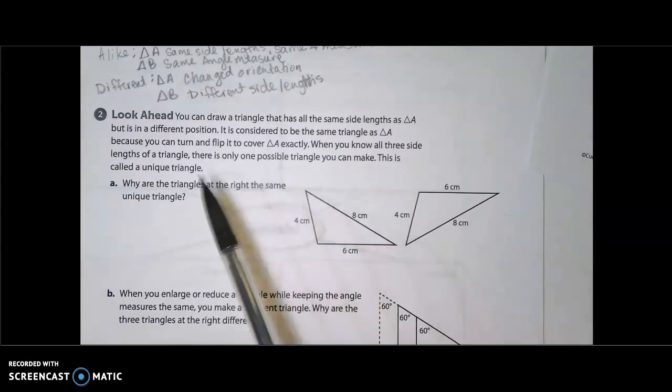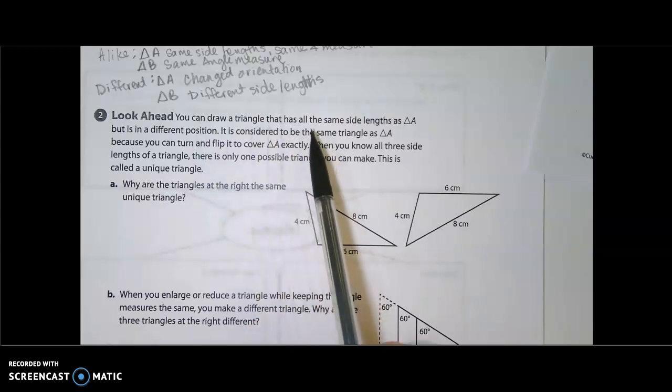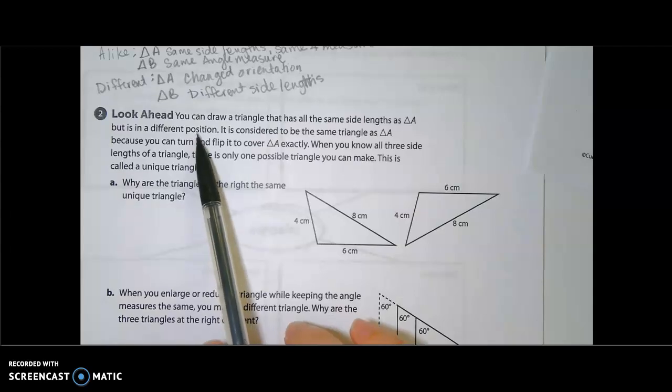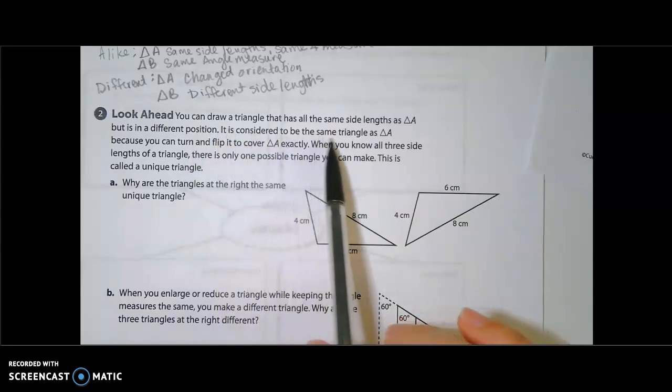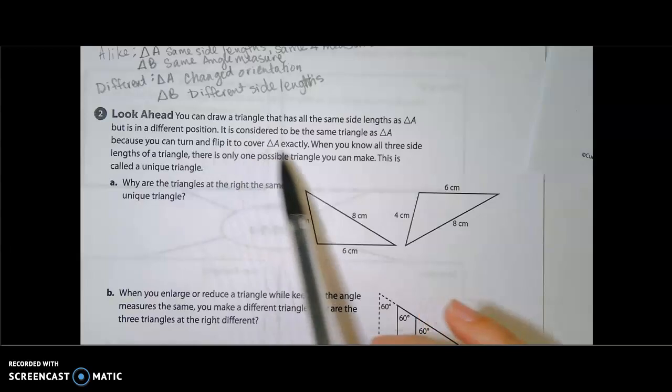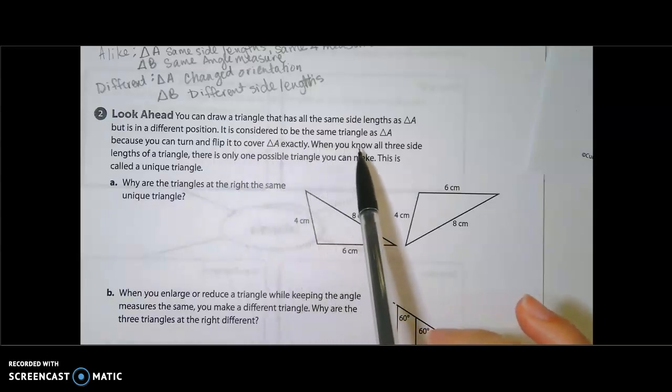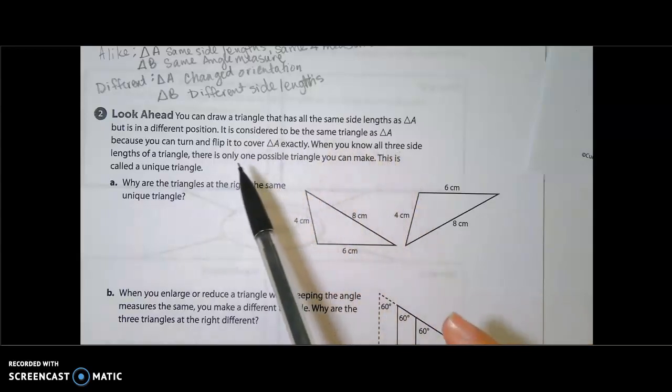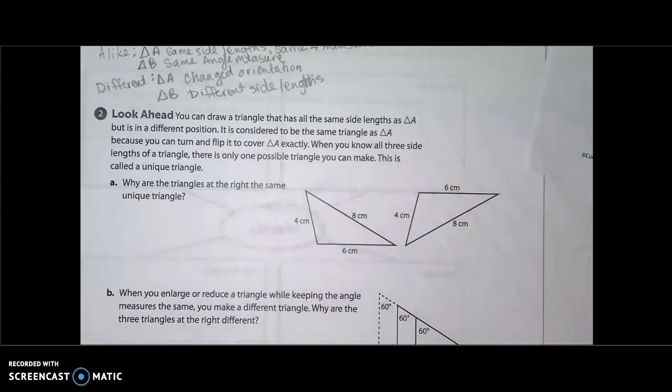Now, when it says to look ahead, it says you can draw a triangle that has all the same lengths as triangle A but is in a different position. It is considered to be the same triangle as triangle A because you can turn and flip it in order to cover triangle A exactly.